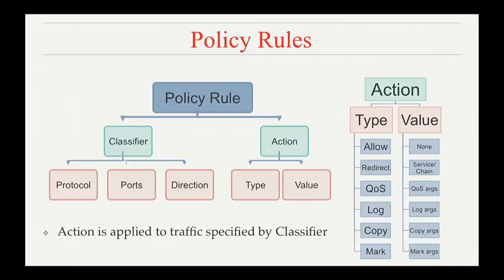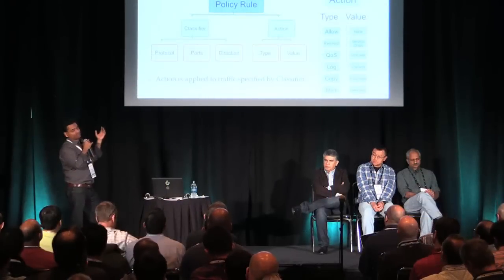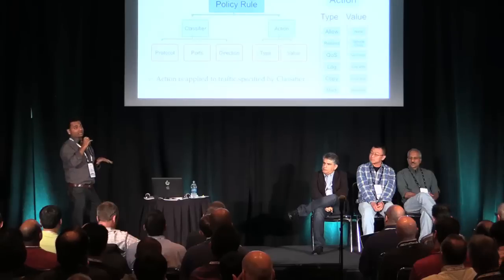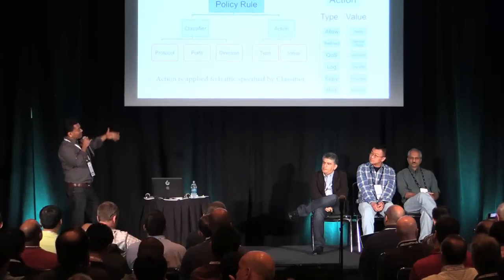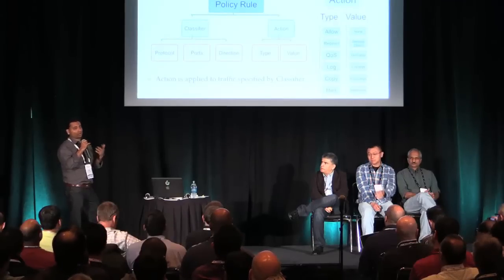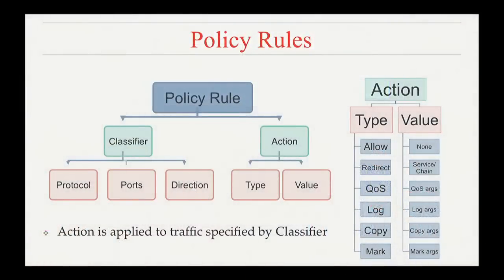In the first iteration of the demo, we implemented allow and redirect actions, based on existing Neutron constructs. The list can be extended to quality of service, log, copy, and mark — it is extensible based on what your infrastructure supports. This is a whitelist-based model, so there is no explicit deny action, which is consistent with how Neutron works — you have to explicitly open communications up.